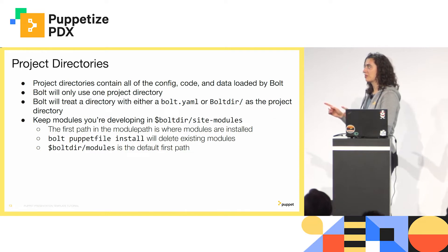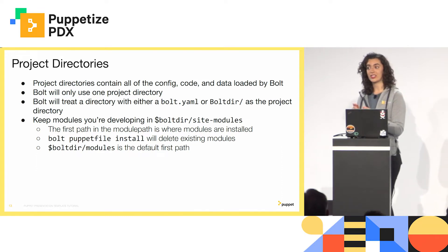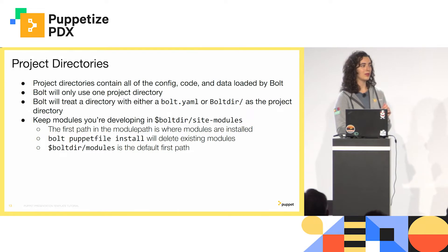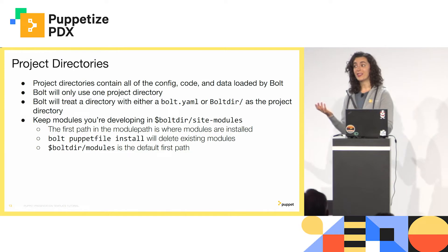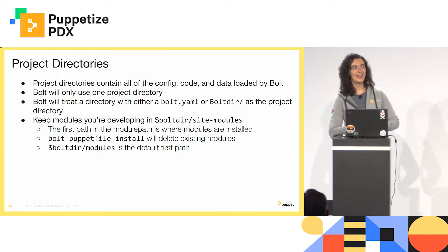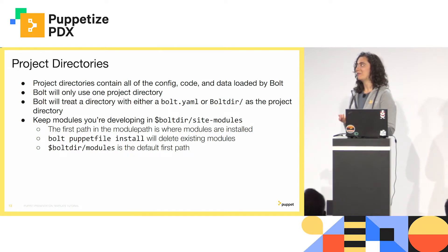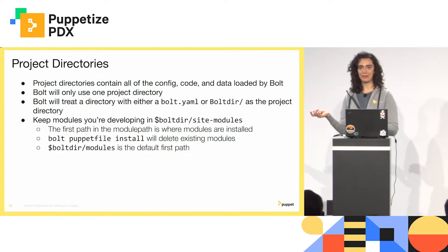One thing that has tripped some people up: keep your modules that you are actively working on in bolter/site-modules. We've seen people use bolter/modules, which makes sense, but that is the first directory on the module path by default. When you run bolt puppetfile install, it overwrites that directory. Luckily the people we were talking to had saved their work in GitHub, but definitely watch out for that — make sure everything you care about lives in site-modules.